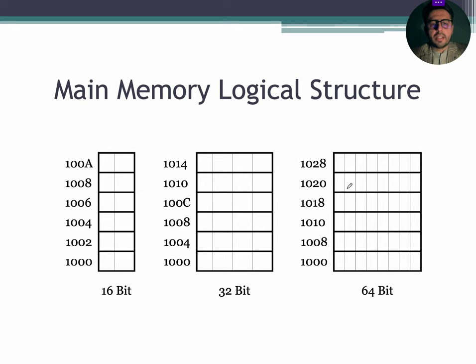The 16, 32 and 64 bit logical configuration of main memory can be seen on the screen. In the 16 bit structure, the segment addresses change by the interval of two. In the 32 bit structure, the segment addresses change by the interval of four. Similarly, in the 64 bit architecture, the segment addresses change by the interval of eight.